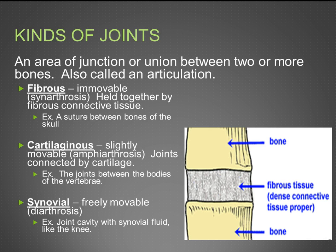When you're born, your skull is in different pieces that are held together around your brain. As you grow, those bones actually fuse together to create fibrous or immovable joints.